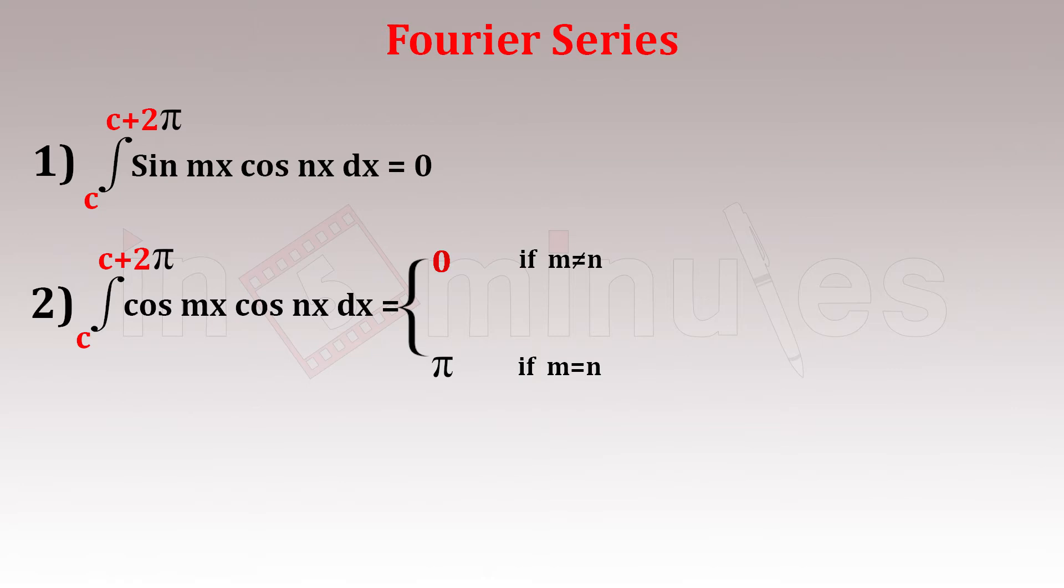Third, the integral from C to C plus 2π of sin mx sin nx dx equals 0 if m is not equal to n. If m equals n, you get the answer as π. These formulas are proved by using sin A cos B, cos A cos B, and sin A sin B formulas.